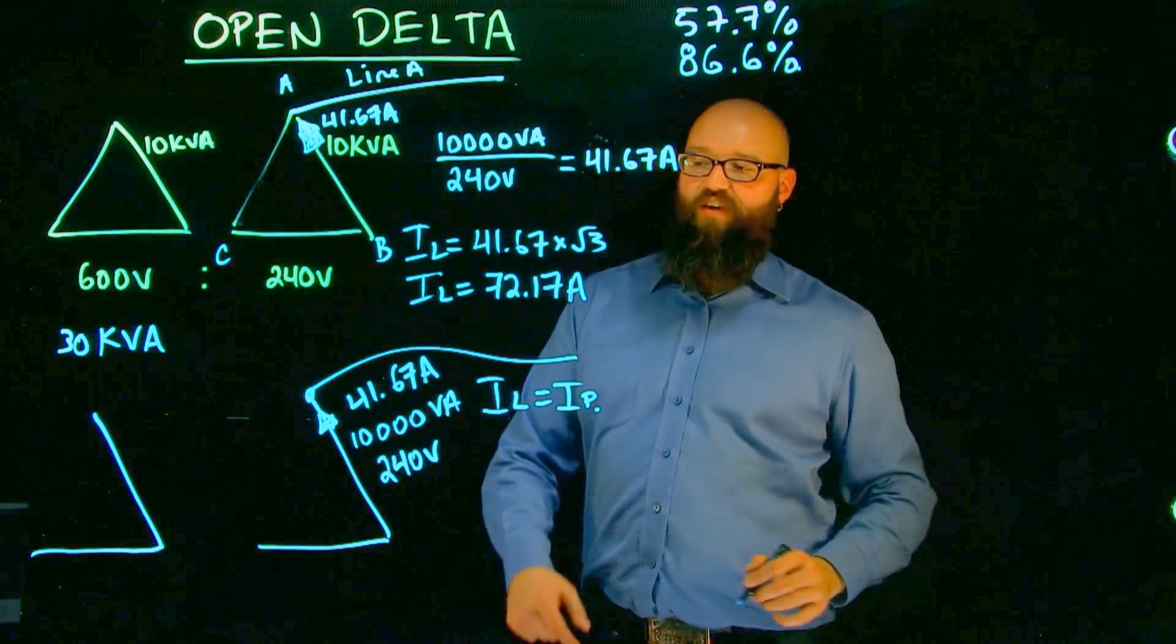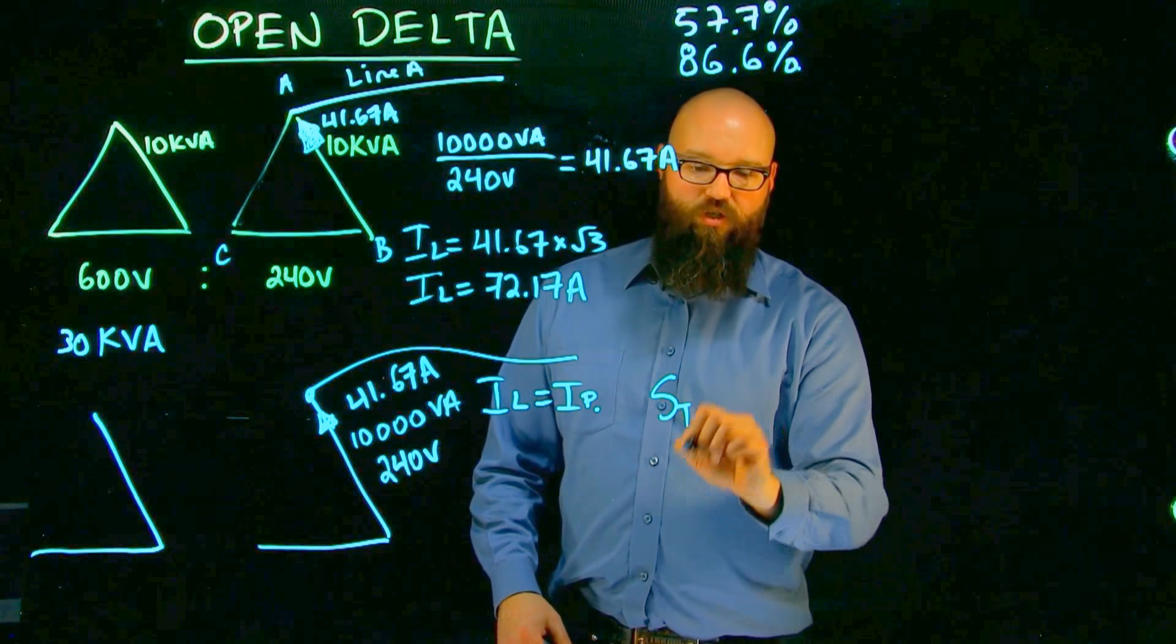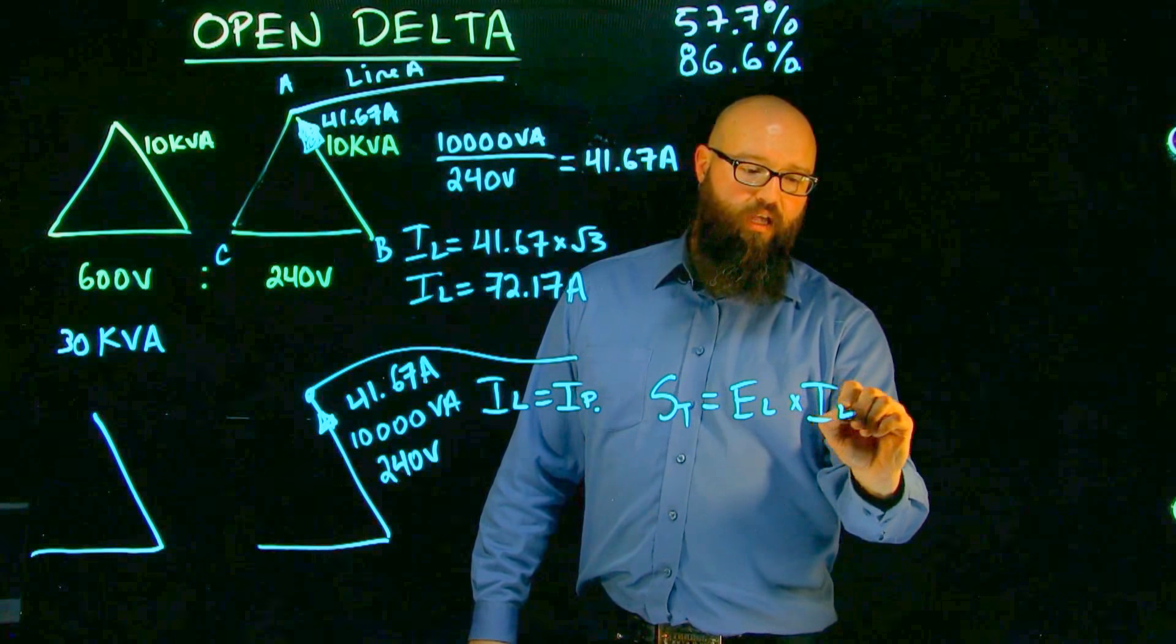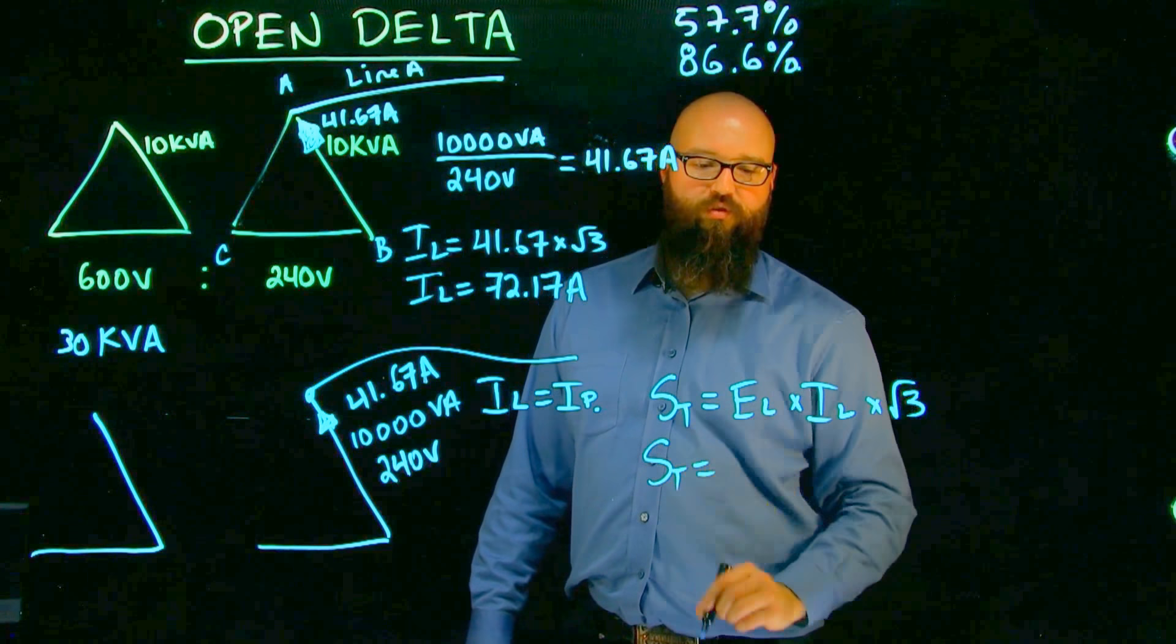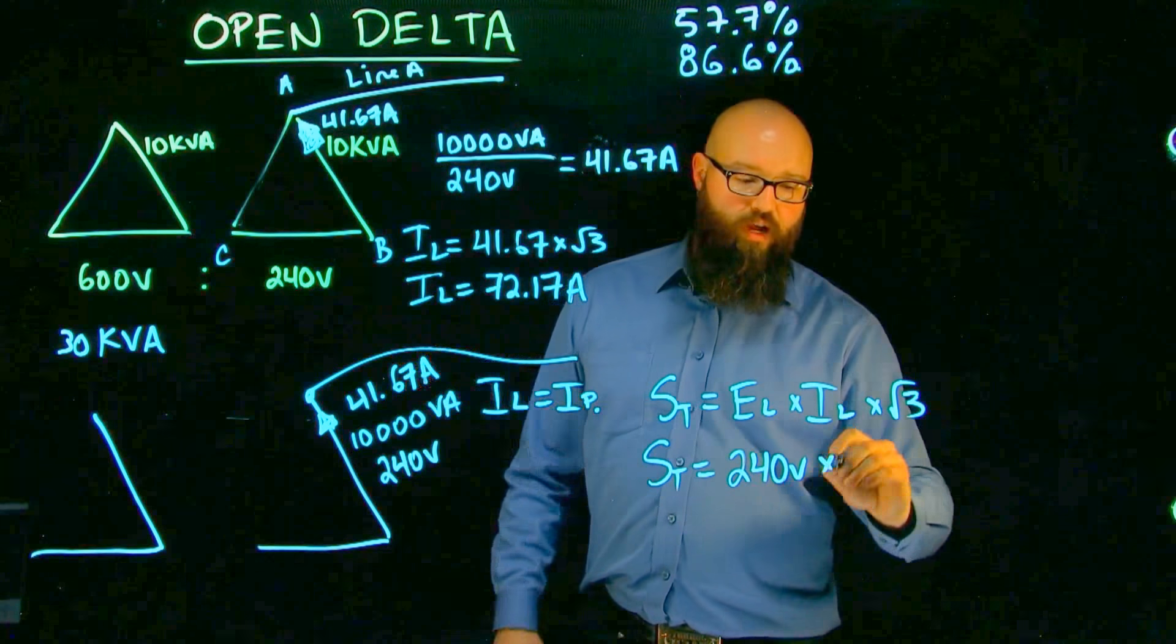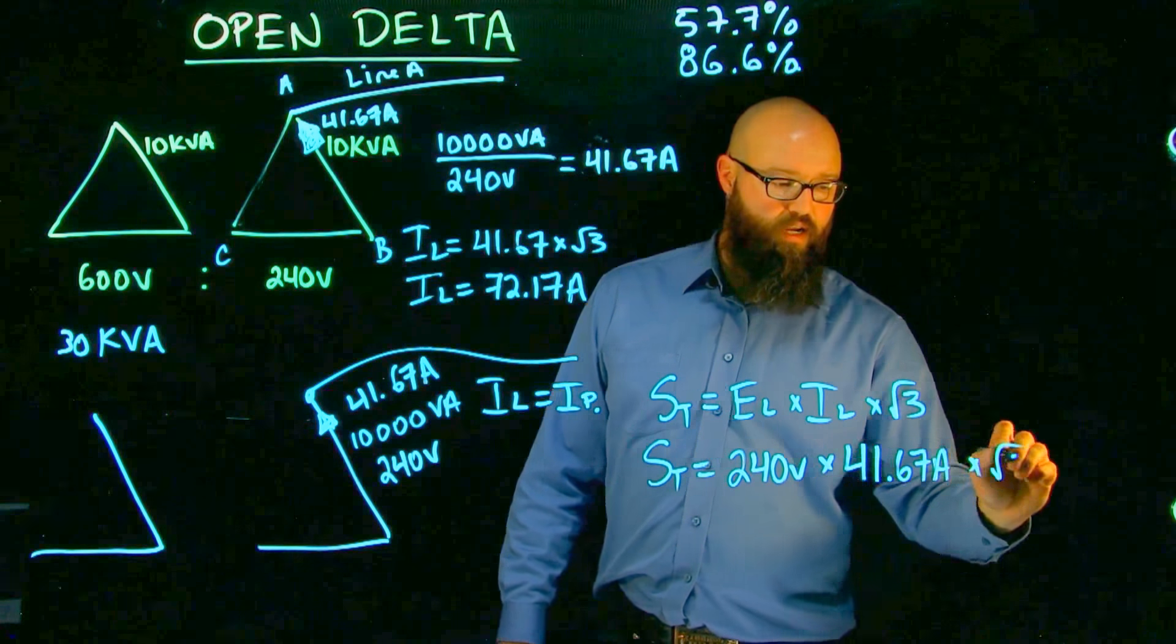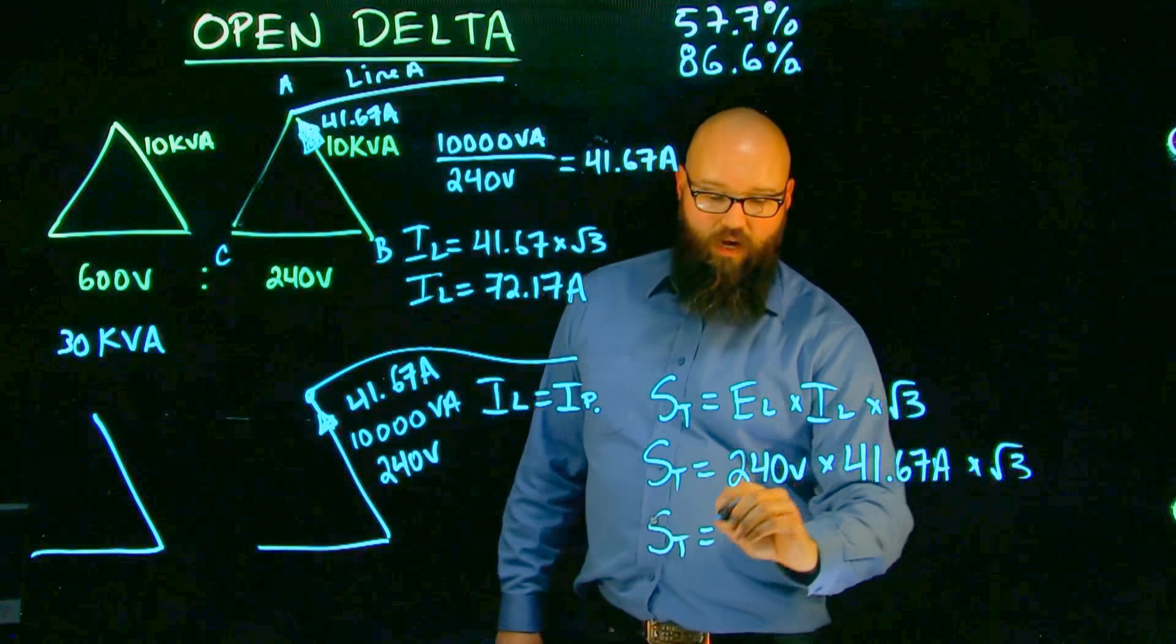if I look at this, and I say that the phase, if I say, we're going to use our S total calculation here. S total is equal to E line times I line times root three, or in this case, S total is equal to our 240 volts, that didn't change,